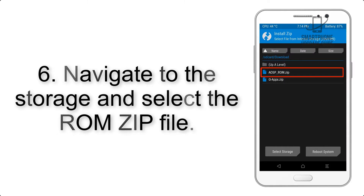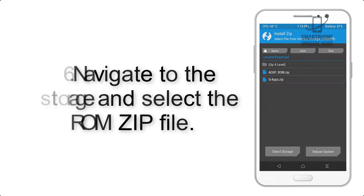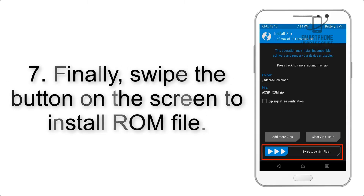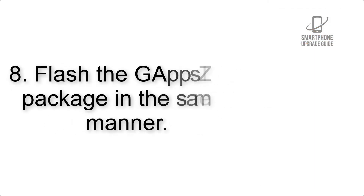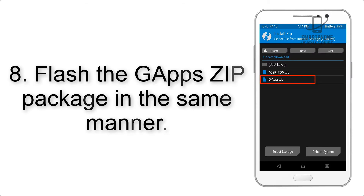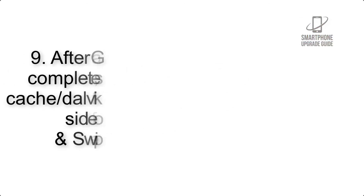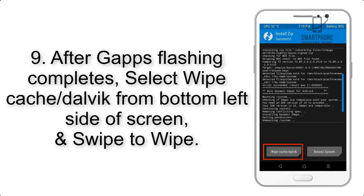Step 5: Go back to the recovery main screen and tap on the Install button. Step 6: Navigate to the storage and select the ROM zip file. Step 7: Swipe the button on the screen to install the ROM file.